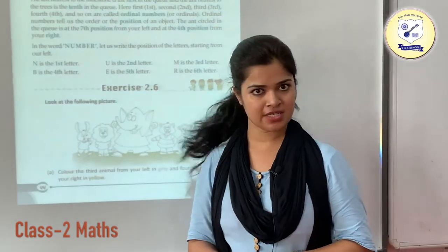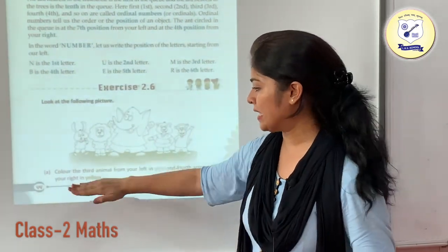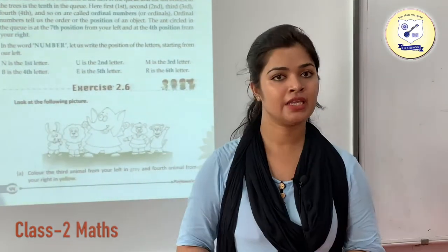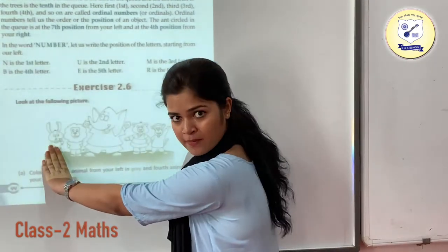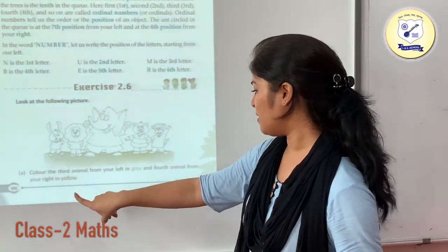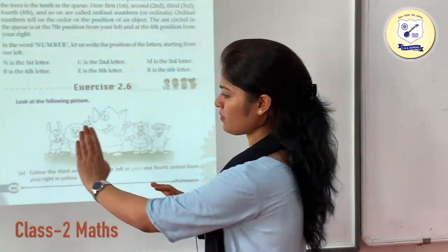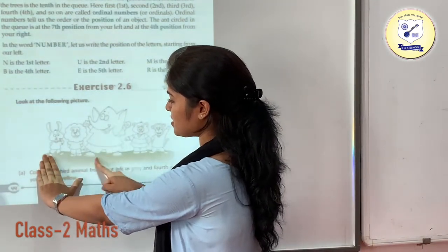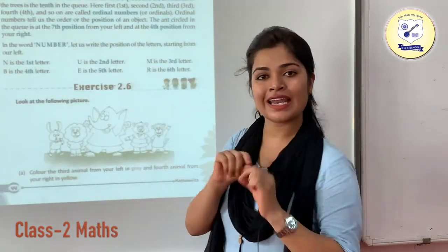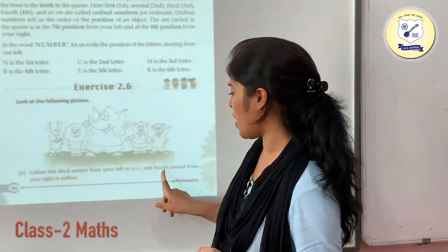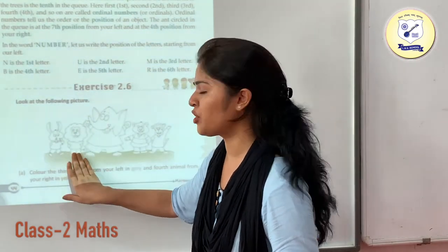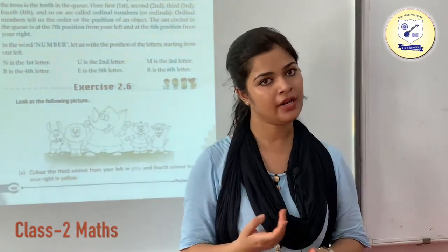Now Exercise 2.6. Look at the picture and colour the third animal from your left in grey and the fourth animal from your right in yellow. From my left, counting: first, second and third — this is going to be your third animal, so I put grey colour into it. And from my right, counting: first, second, third and fourth — so I put yellow colour into it.